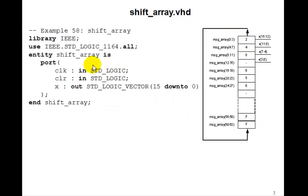We'll call it shift_array, and we'll have a clock, clear, and x in, and x out. So this x is going to be 15 down to 0, and this shift_array will be the shift array which is going to shift.